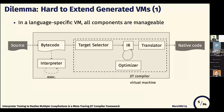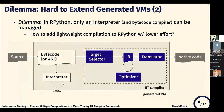In managed language runtimes, every component can be managed, so it is easy to realize multi-level compilation by adding another just-in-time compiler and a fine-grained front-end sector. But in RPython, only the interpreter and bytecode compiler can be managed. Other components such as the front-end sector, IR, optimizer, and translator in the JIT compiler, which are provided by RPython core, are fixed. So, how do you realize multi-level compilation in this situation? In particular, how to add lightweight compilation to RPython with low effort?